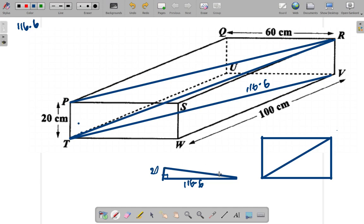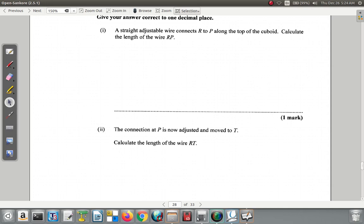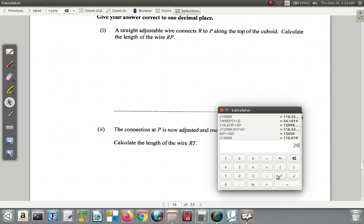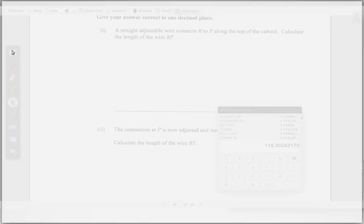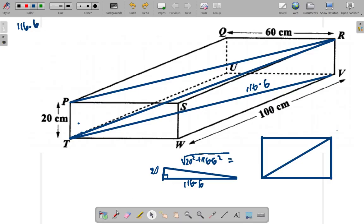So what you would have here is a hypotenuse which is a little longer than the 116.6. Let's calculate that. This would be the square root of 20 squared plus 116.6 squared. So 20 squared plus 116.6 squared equals that, and then the square root of that is 118.3, so we would have 118.3 centimeters.